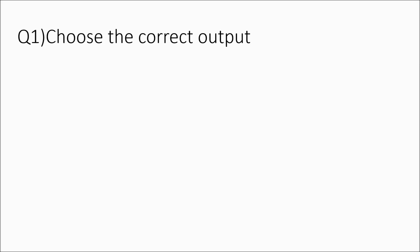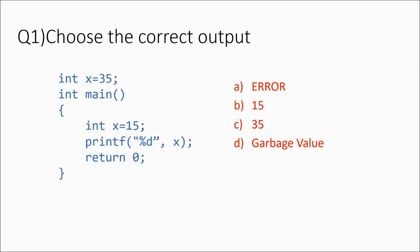The first question is: choose the correct output. So we have int x equal to 35 declared as a global variable, and then inside the main function we have another variable x assigned as 15. In the next line we are printing x. So what is the output?